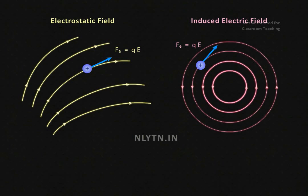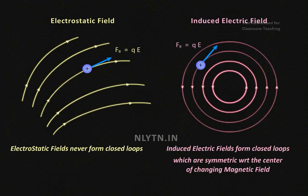However, there is one fundamental difference between the induced electric field and electrostatic field. Electrostatic fields never form closed loops, whereas induced electric fields form closed loops which are symmetric with respect to the center of the magnetic field.